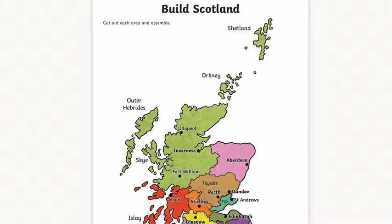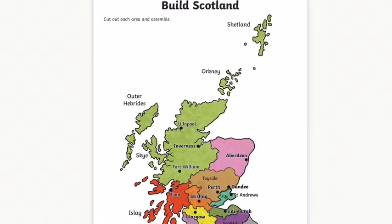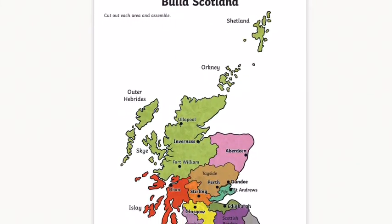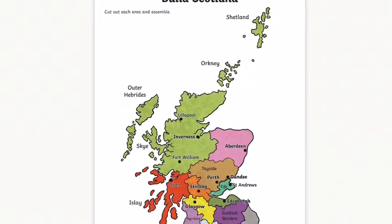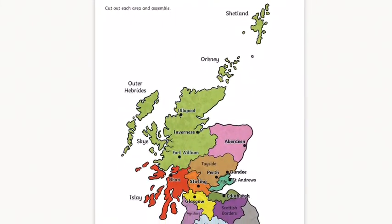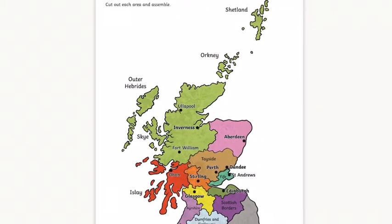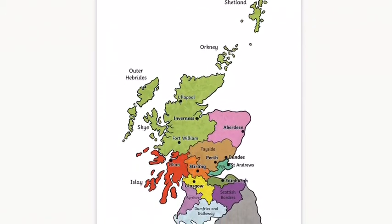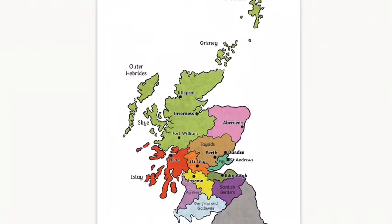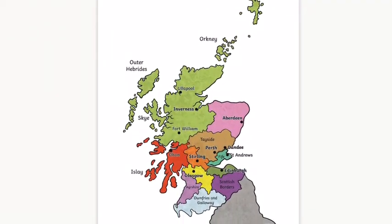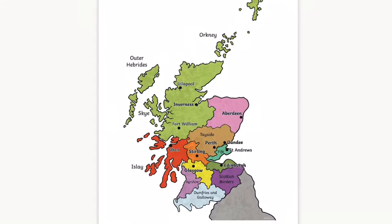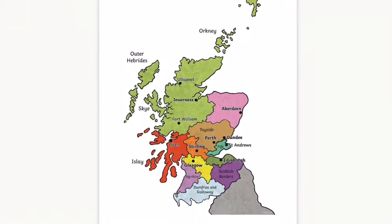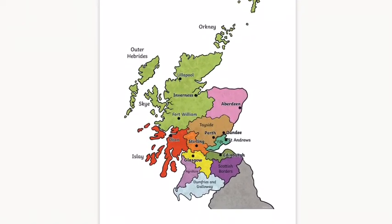This is the reference map. It has the names of some towns and cities in Scotland on it. It doesn't have the names of any landmarks, so you will need to look them up or use what you've already learned about Scottish landmarks to find them on the map.